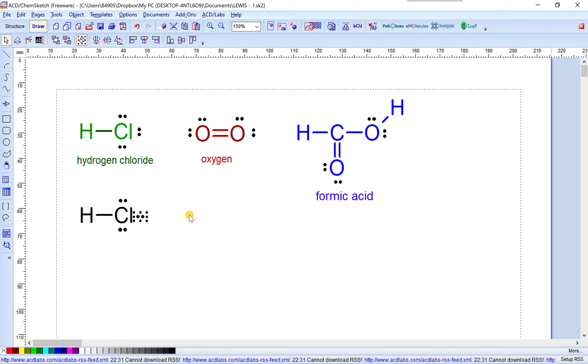Hold down the shift on the keyboard and then choose rotate. Okay, move the mouse pointer to the corner here and rotate 90 degrees. Okay, yes, we have finished drawing the Lewis dot structure of hydrogen chloride molecule.